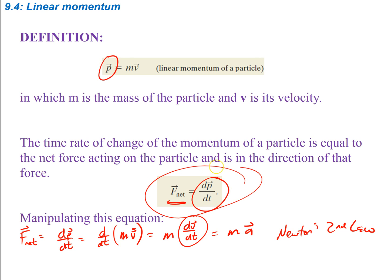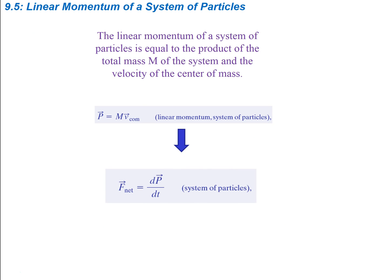That's kind of where we get this equation from. The linear momentum of a system of particles is going to be equal to the product of the total mass of the system, big M, and the velocity of the center of mass of that system. In a previous lecture we showed how to find where the center of mass is. This is the velocity of the center of mass, and we use capital P since we're talking about a system of particles. Therefore the net force on a system of particles is simply the derivative of momentum per unit time.